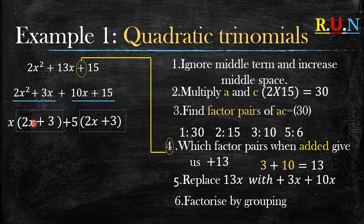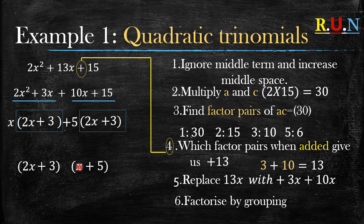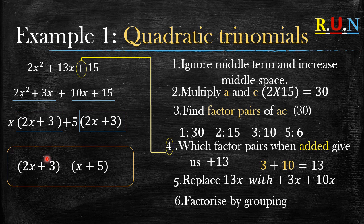If the two brackets are the same, take one bracket as part of your answer, then take the other outside terms — x plus 5 — as the second part of your answer. To test if this is correct, multiply it out and it should return your original question.